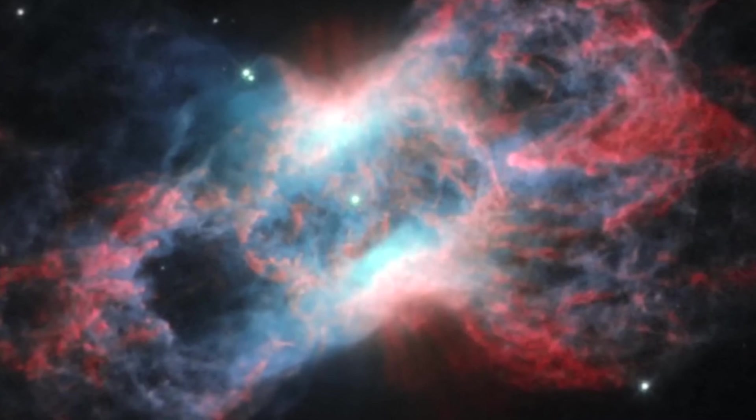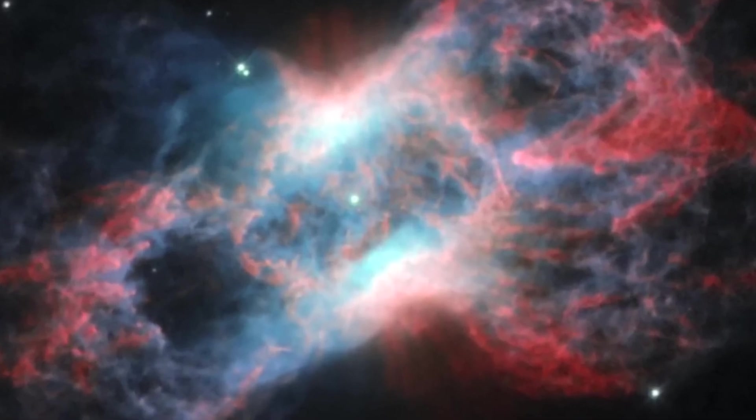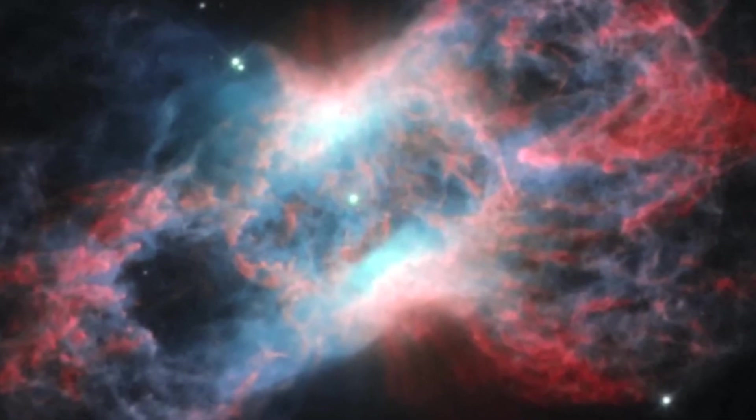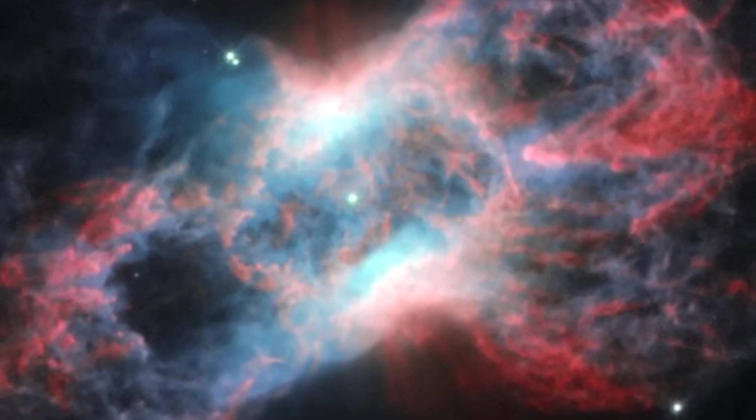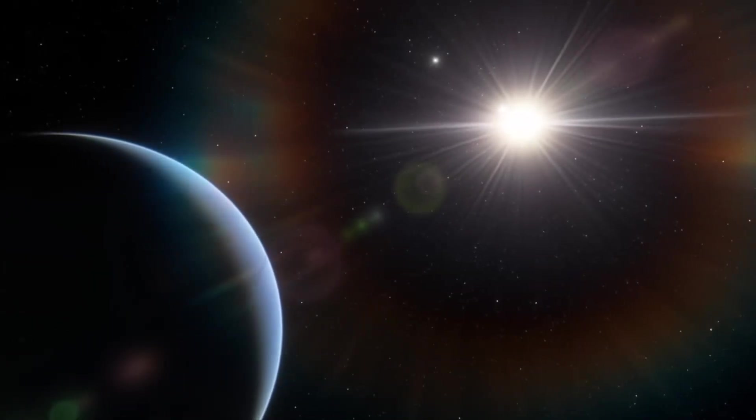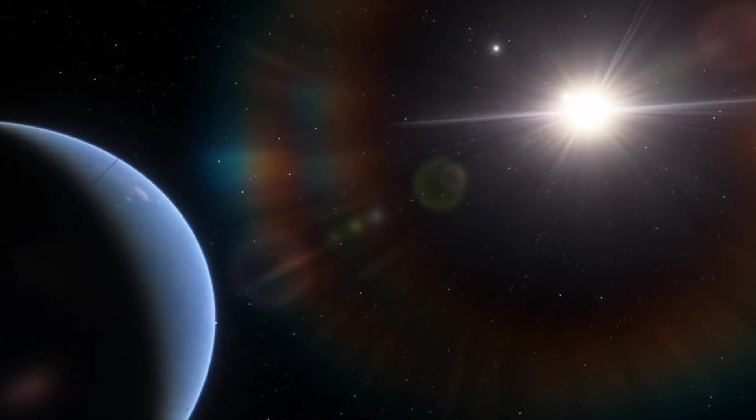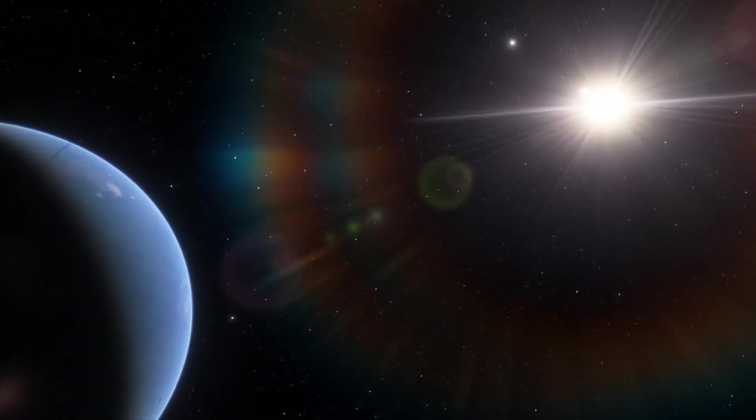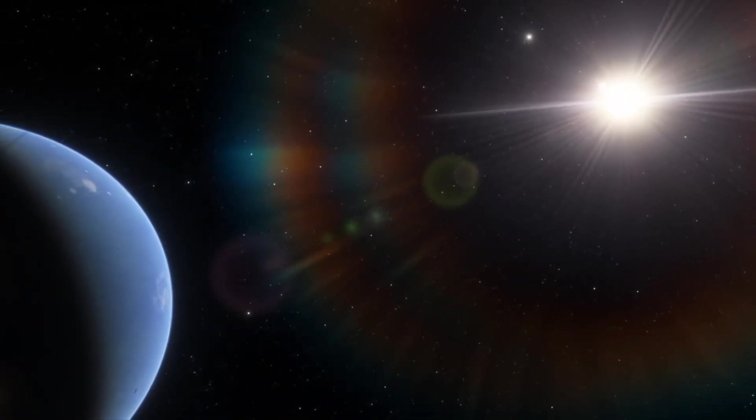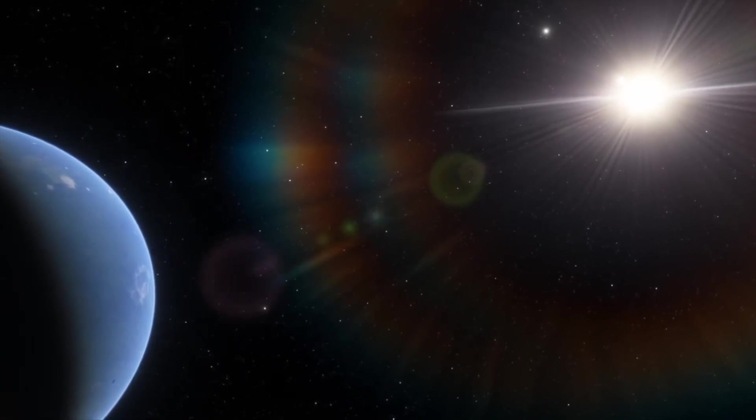This high-energy radiation has the ability to catalyze the removal of oxygen from the ozone layer that protects the Earth. Without the ozone layer, life on Earth's surface would be exposed to the full force of the sun's ultraviolet radiation, which could result in an extinction event in the first few seconds of a supernova.